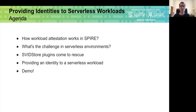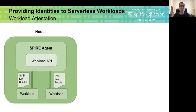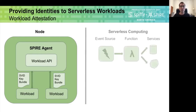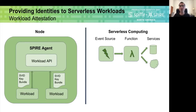If you're familiar with how SPIRE attests and provides identities to workloads, you probably know that this is a pretty straightforward process where workloads simply call the workload API to get the identity. But what happens if you can't deploy a SPIRE agent in your environment? One example of such a situation is serverless computing, where an event triggers the execution of a function that runs in an execution environment, interacting with different services.